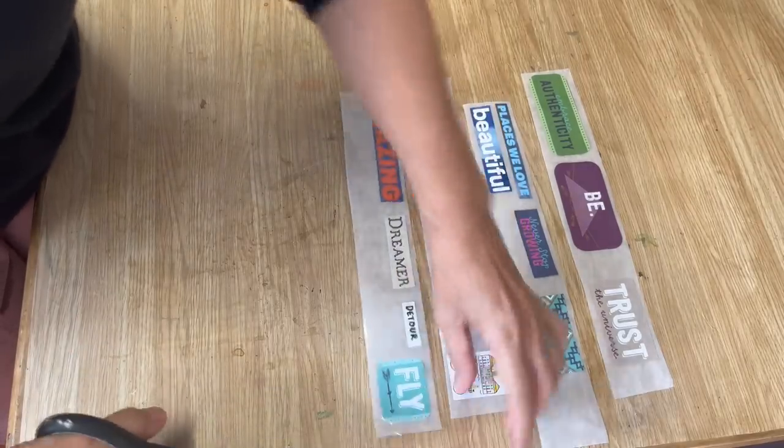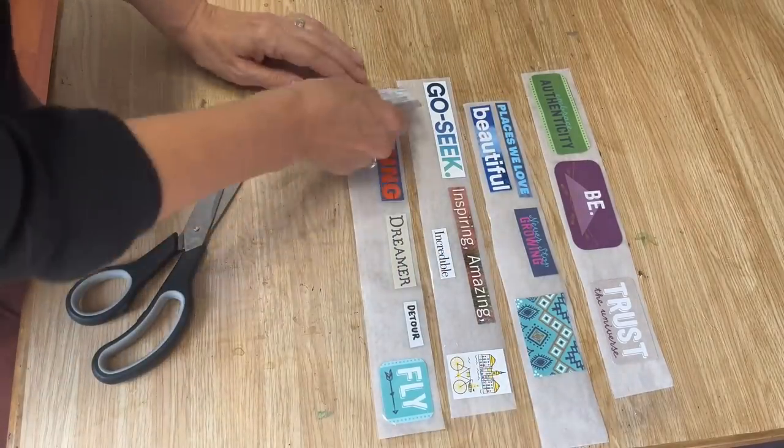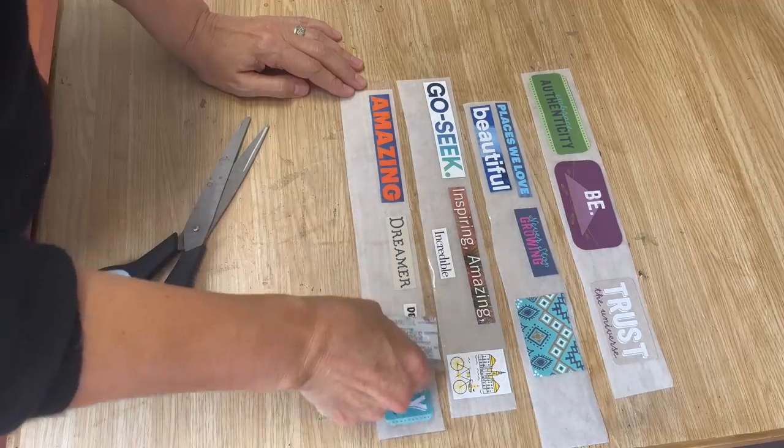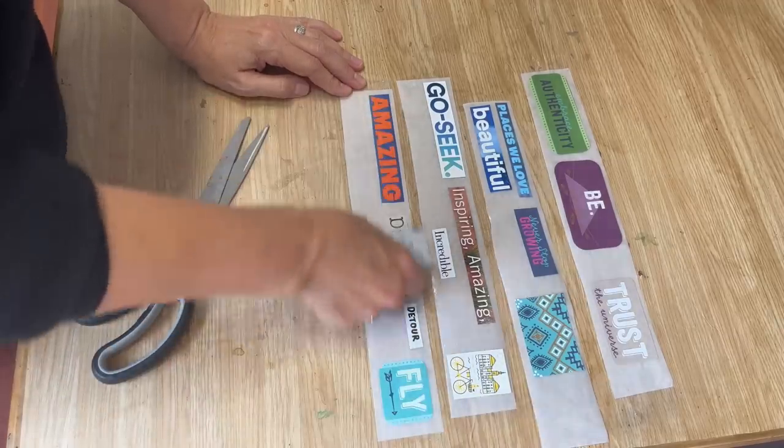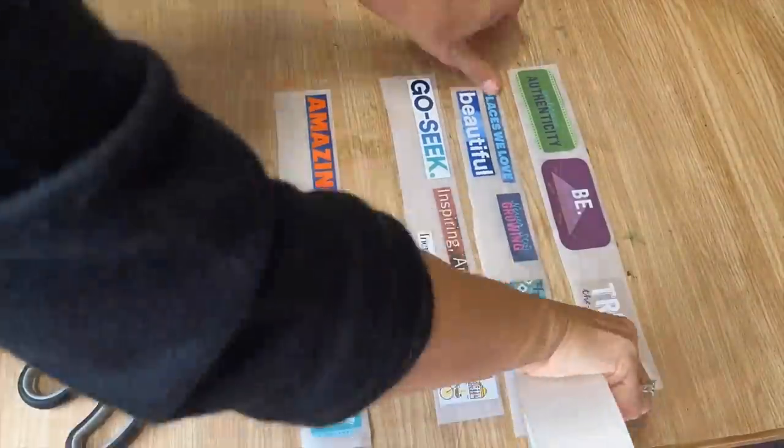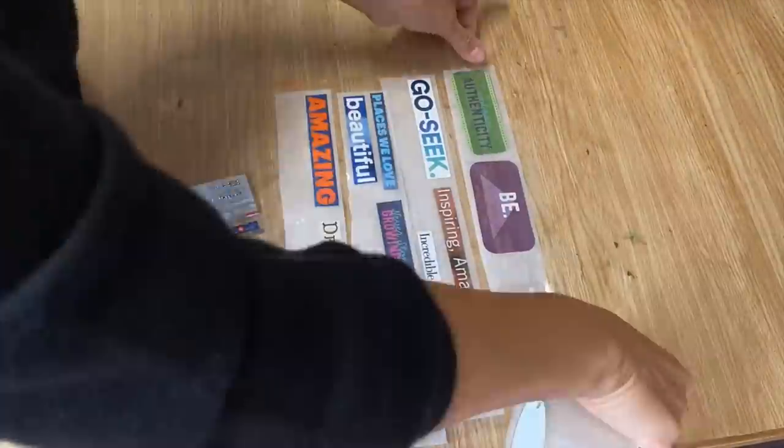We put them down on the first layer of packing tape and parchment paper. Then I'm gonna take a credit card and I'm gonna press it down really firm.